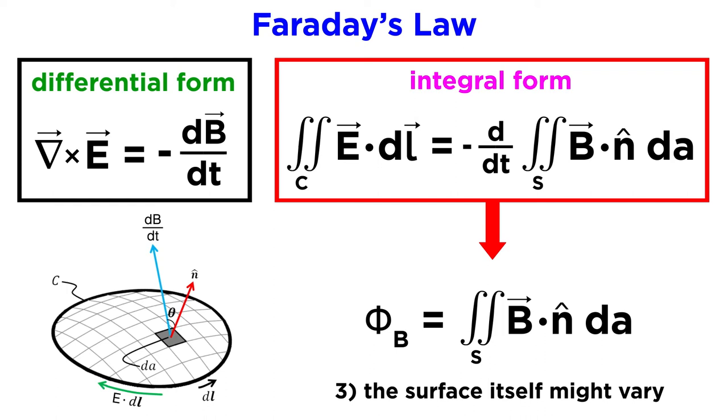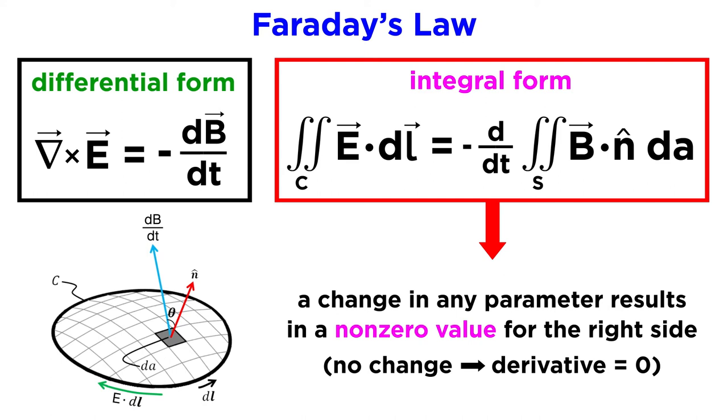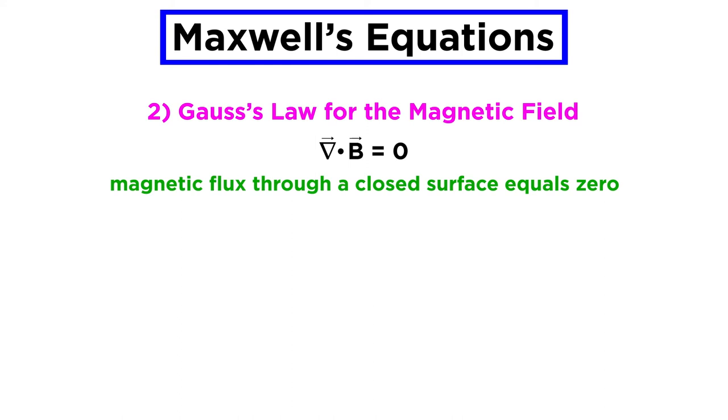Finally, even if the magnitude and direction of both B and n remain the same, the surface itself might vary, creating a change in flux. Each of these changes, or some combination thereof, will cause the right side of Faraday's law to take on a nonzero value.